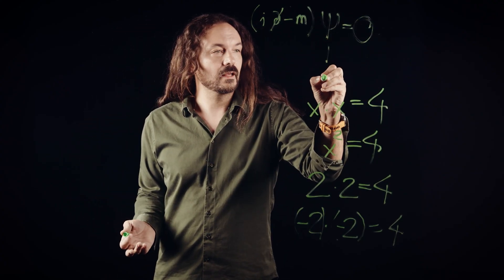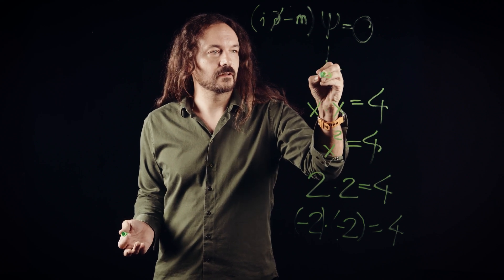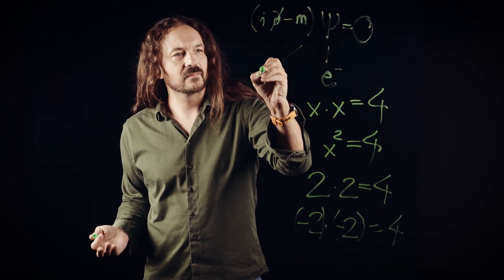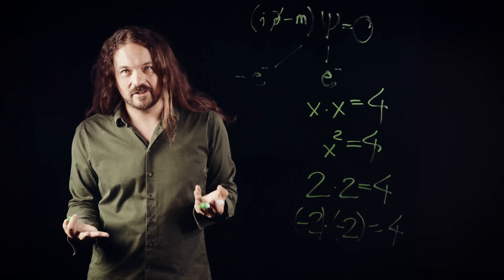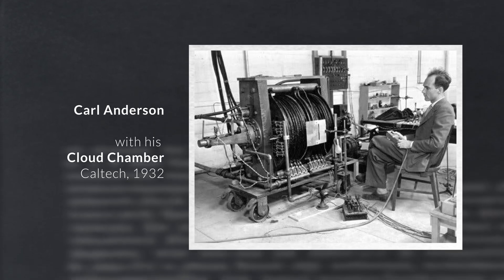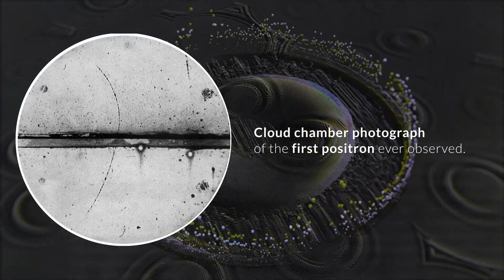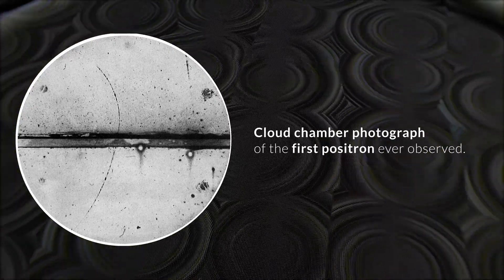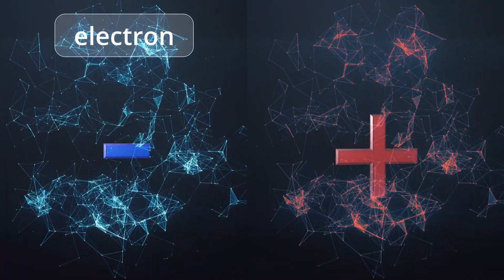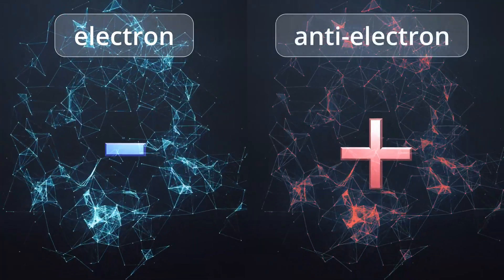One of them is our old friend, the electron, but it has a second solution, which is kind of like an electron with negative energy. The physical interpretation of this second solution was unclear at first. But then, four years later, in 1932, Karl Anderson discovered the positron. Physicists quickly realized that this was the missing other solution to Dirac's equation — a particle pretty much identical to the electron, but with positive instead of negative electrical charge: the anti-electron.